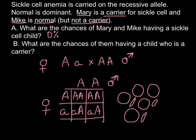For Question B — what are the chances of having a child who is a carrier? As you can see, 50% of their children would be carriers: 2 out of 4, which simplifies to 1 out of 2, or 50%. All of these expressions represent the same answer.